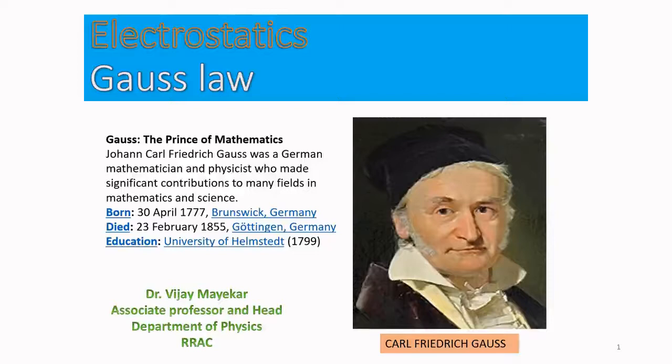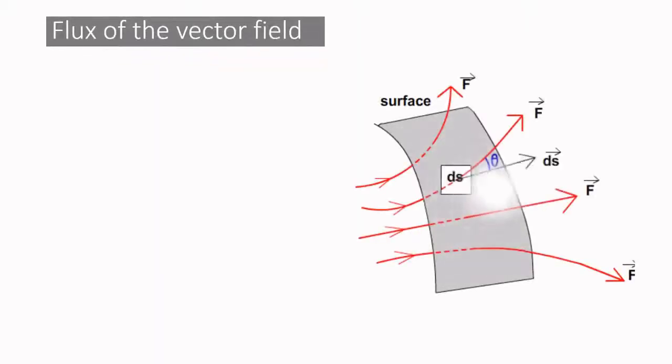Today we are discussing Gauss law. Here we are referring to the flux of the vector field through the surface, so it could be stated in a convenient manner. You can see the surface located here and the vector field F bar is piercing through this particular surface.